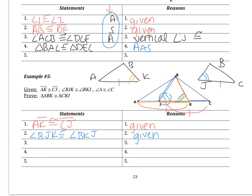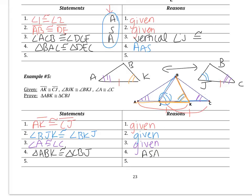Lastly, I know that angle A is congruent to angle C — also given. Looking at my two redrawn triangles, I have two pairs of angles and a pair of sides. The sides are the included sides connecting the angles, so the triangles are congruent by ASA. When you have overlapping triangles, it can make your life a lot easier if you redraw them separately.